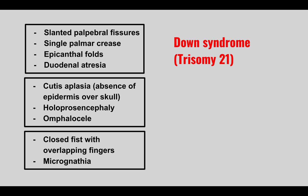The next condition: cutis aplasia (absence of the epidermis over the skull), holoprosencephaly, and omphalocele. This is Patau syndrome — trisomy 13. Remember you get a bunch of midline defects: skull abnormalities, cleft lip, cleft palate, and omphalocele. Think of all your midline defects.